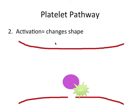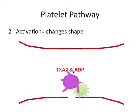The second step is activation, where the platelets change shape. Binding to von Willebrand factor excites these platelets, so they get activated and grow these kind of legs. Not only that, but they secrete activators that include thromboxane A2 and ADP, which further activate other circulating platelets.